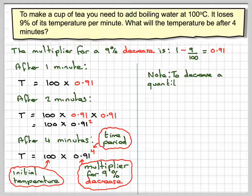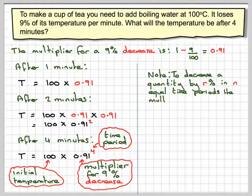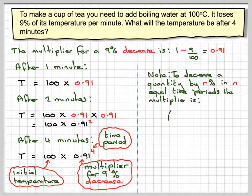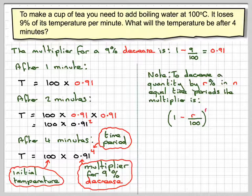Note to decrease a given quantity by r percent in n equal time periods, the multiplier is 1 minus r over 100 to the power of n.